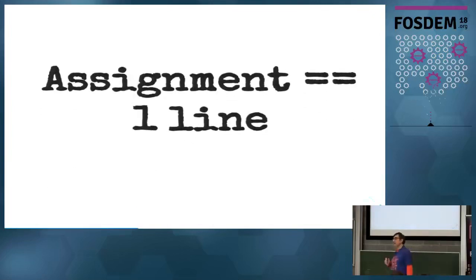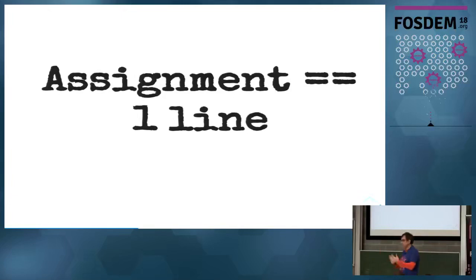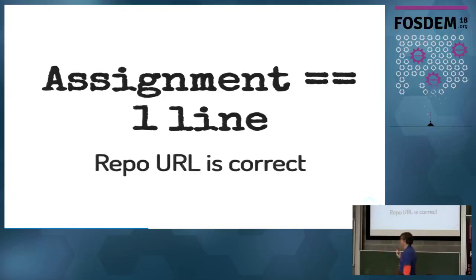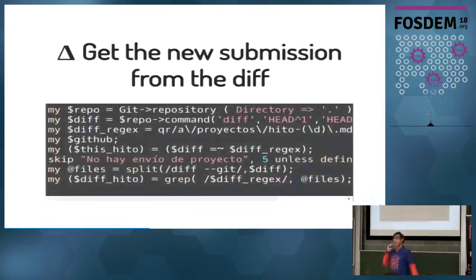So what do we check? The first thing — quite important — is that the student has only modified a single line in the file. Because sometimes they had an old version of the file and changed things and submitted the wrong file. I have to check that only one row in the table is being modified, so I can extract a single URL. That's the first check. I also check that the repo URL is correct — sometimes people submit with typos.